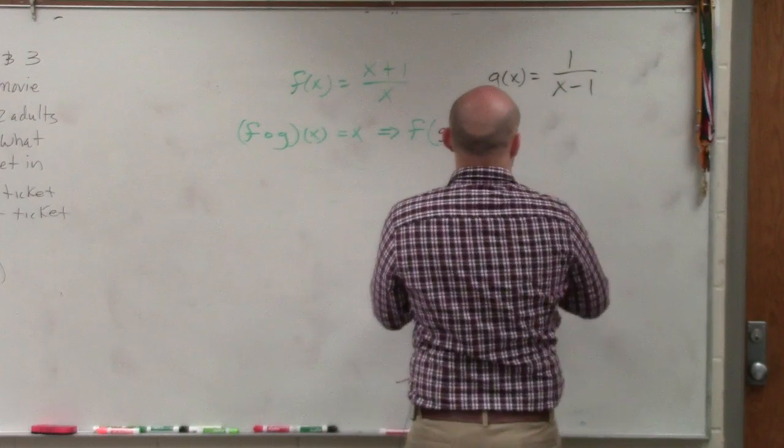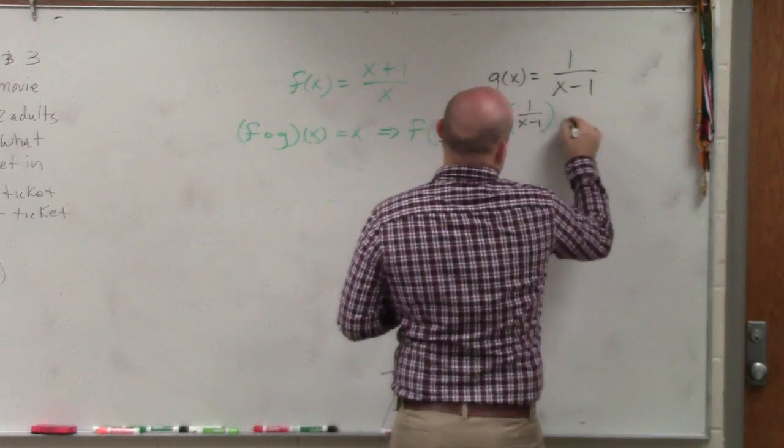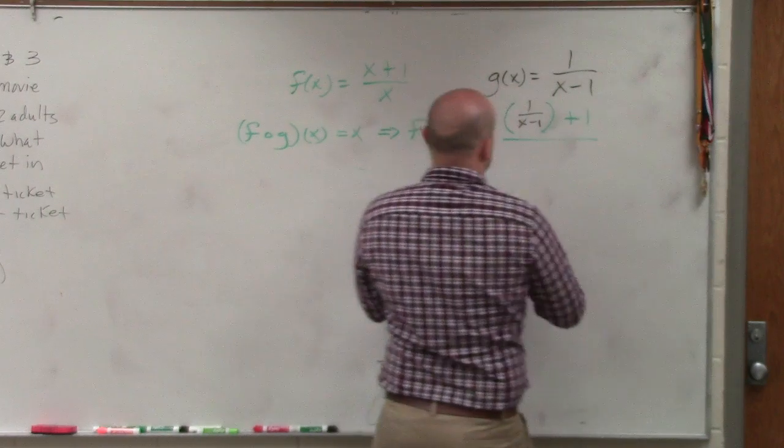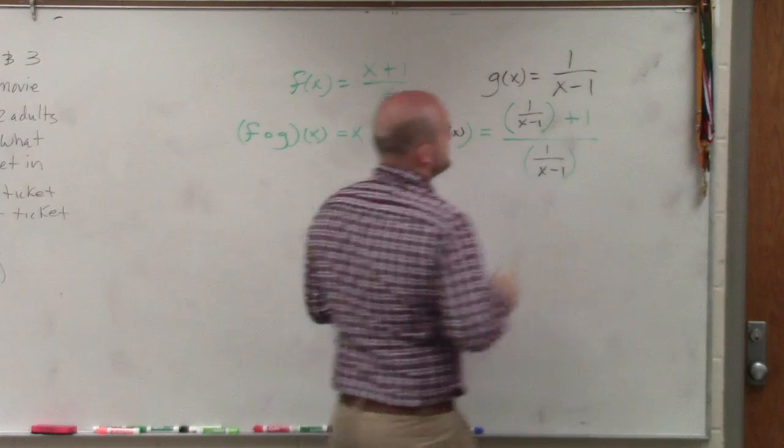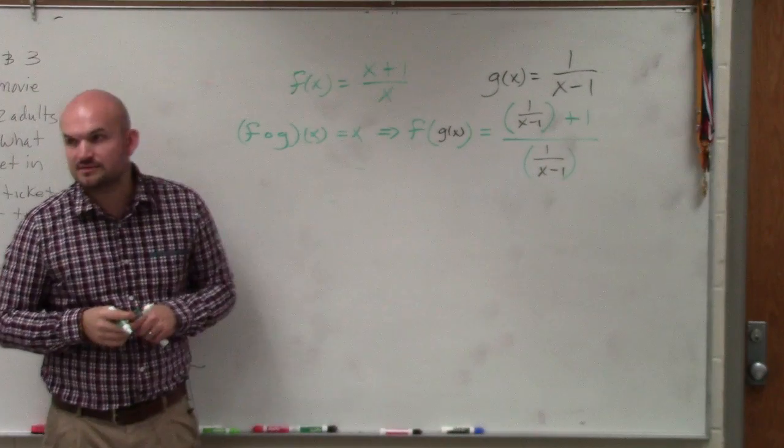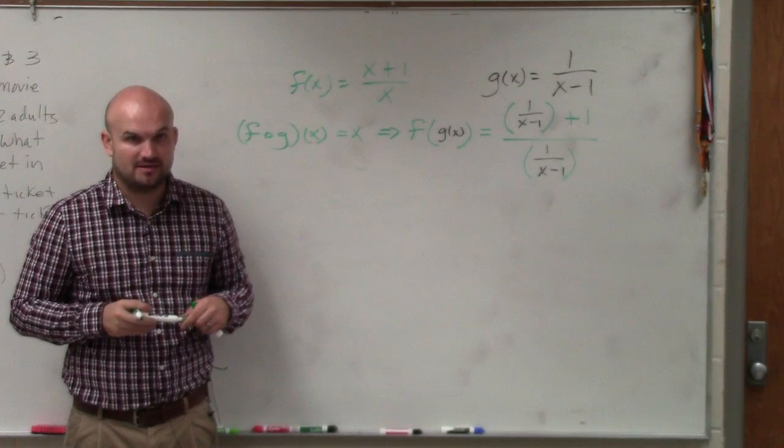So that's going to look like this. 1 over x minus 1 plus 1 all over 1 over x minus 1. Do you guys see how I plugged in the function of g of x in for the x variable in f of x? Does everybody see that? Okay.